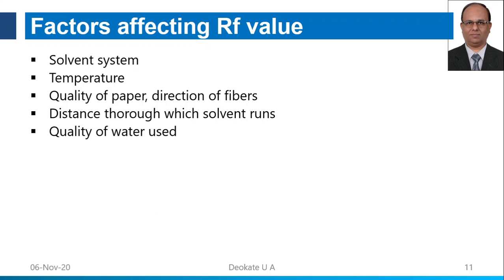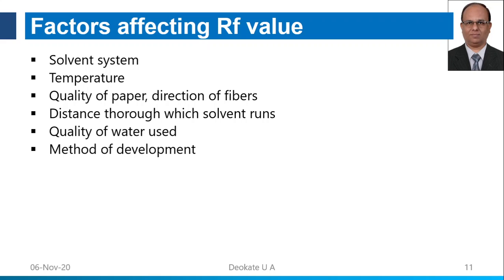The quality of water used also matters, as water containing inorganic impurities can interfere with the determination and affect RF values. The method of development is another factor — including ascending, descending, circular, ascending-descending, and two-dimensional paper chromatography. The development method used must be noted in reference RF values, otherwise observed and reference values cannot be compared.